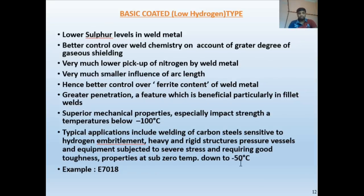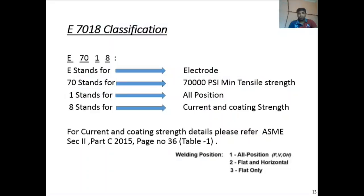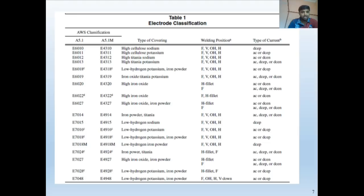For E7018 classification: '70' = 70,000 psi; '1' = all position; '8' = current and coating type. Referring to Table 1, '8' indicates low hydrogen potassium iron powder coating — which is why this is called a low hydrogen electrode.